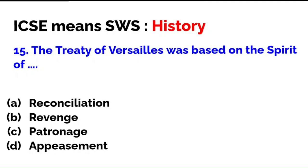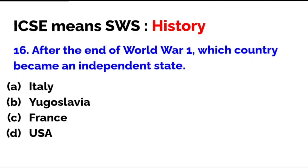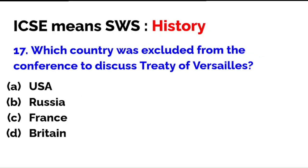After the end of World War One, which country became an independent state — Italy, Yugoslavia, France, or the USA? The correct answer is B — Yugoslavia. There were other countries too; you need to know the geographical changes that happened in Europe after WWI. Which country was excluded from the conference to discuss the Treaty of Versailles — USA, Russia, France, or Britain? The correct answer is Russia.